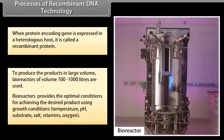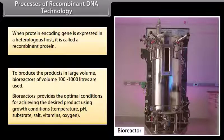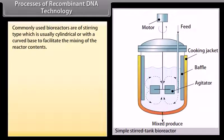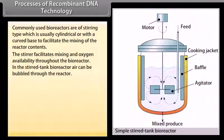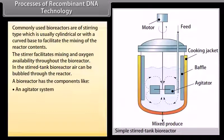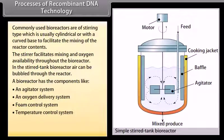Bioreactors provide optimal conditions for achieving the desired product using growth conditions such as temperature, pH, substrate, salt, vitamins, and oxygen. Commonly used bioreactors are of the stirring type, which is usually cylindrical or with a curved base to facilitate mixing of the reactor contents. The stirrer facilitates mixing and oxygen availability throughout the bioreactor. In the stirred tank bioreactor, air can be bubbled through the reactor. A bioreactor has components including an agitator system, an oxygen delivery system, foam control system, temperature control system, pH control system, and sampling ports.